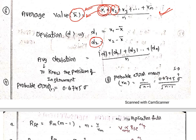Average deviation formula: (|d1| + |d2| + |d3| + ... + |dn|) / n. This is the formula to know the precision of the instrument.